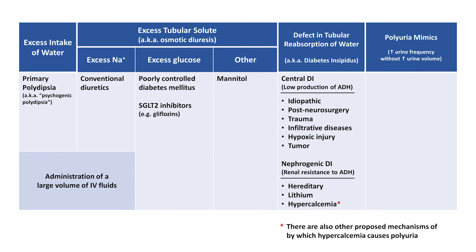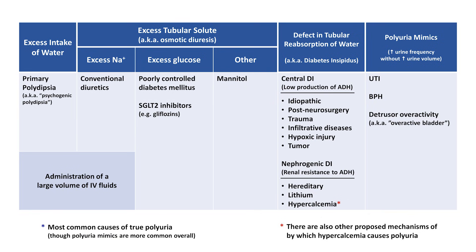Last are the mimics, which are collectively much more common than causes of true polyuria. Diseases in this category include urinary tract infections, benign prostatic hyperplasia, and detrusor overactivity, colloquially known as an overactive bladder. Of all these, the most common causes of true polyuria are diuretic use and poorly controlled diabetes mellitus.